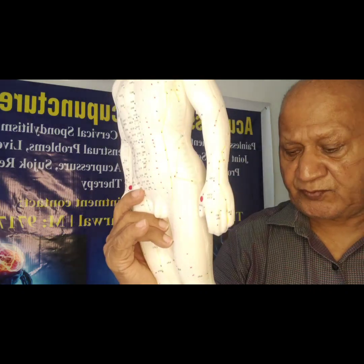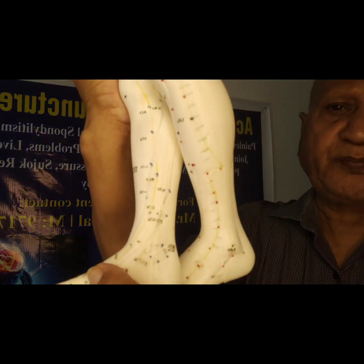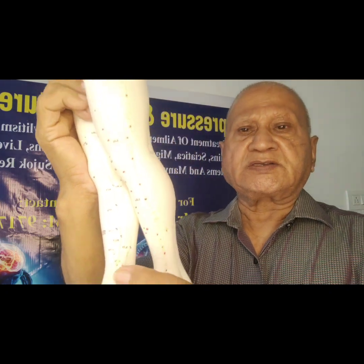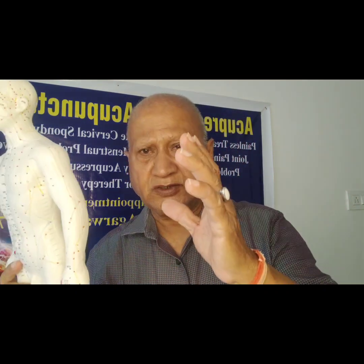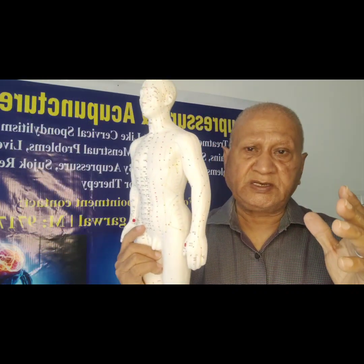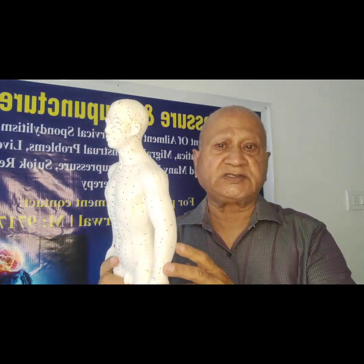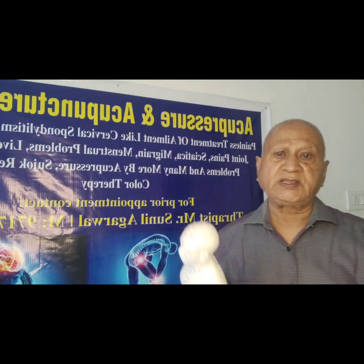The next point is Spleen 4. This is a luo connecting point. This point transfers energy from the stomach to the spleen, balancing the energy of the liver and the spleen. If there is excess energy in the stomach, it will come to the spleen, and vice versa — both the stomach and spleen are balanced. Because stomach and spleen are both responsible for your digestive system, your colon, large intestine, and small intestine.